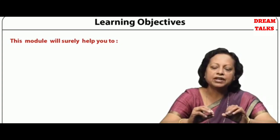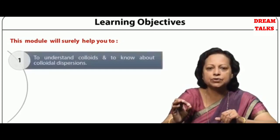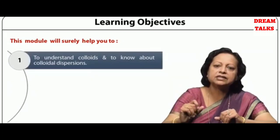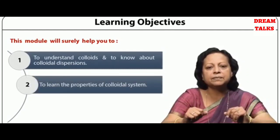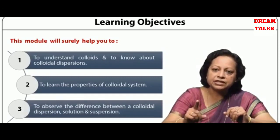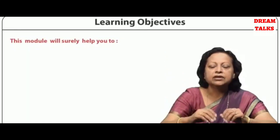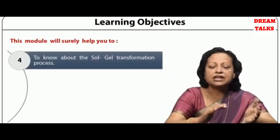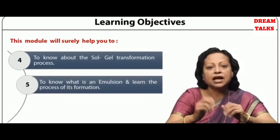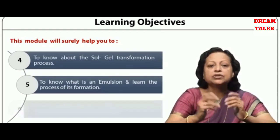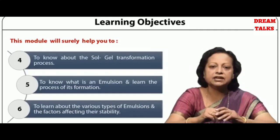This module on emulsions and colloids in the paper food science will surely help you to understand colloids and to know about colloidal dispersions, to learn the properties of colloidal systems, to observe the differences between a colloidal dispersion, solution and suspension, to know about the sol-gel transformation process, to know what is an emulsion, its formation, various types, and the factors affecting their stability.